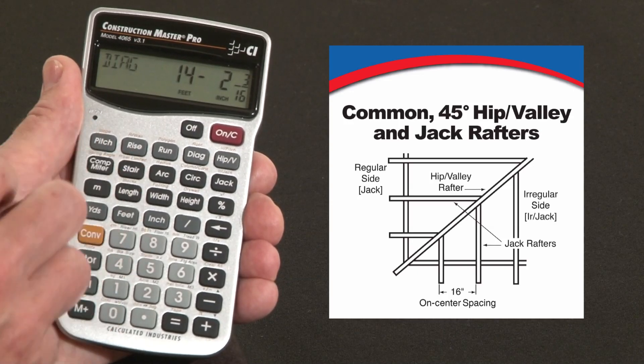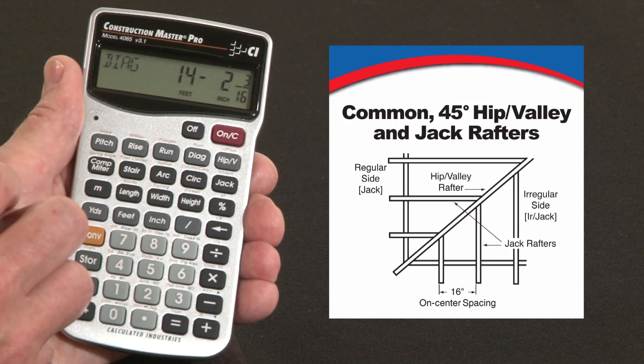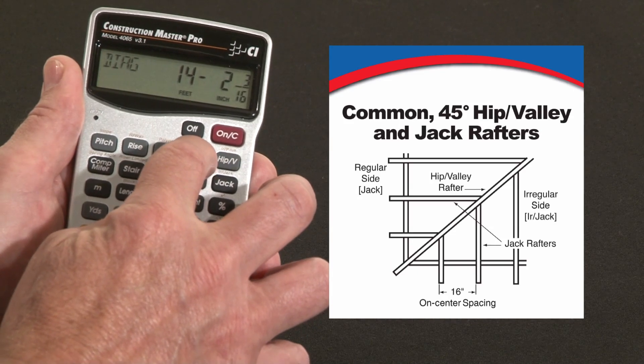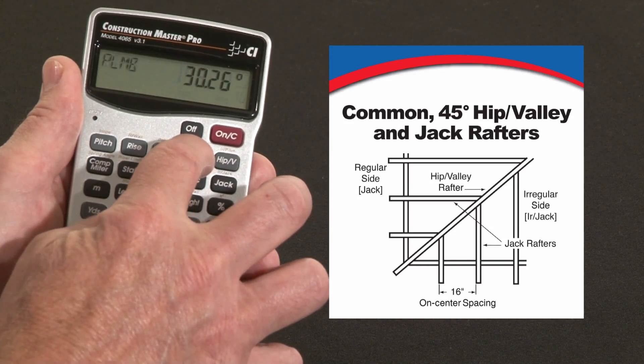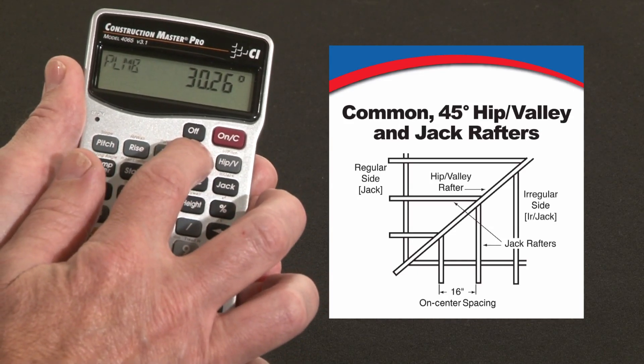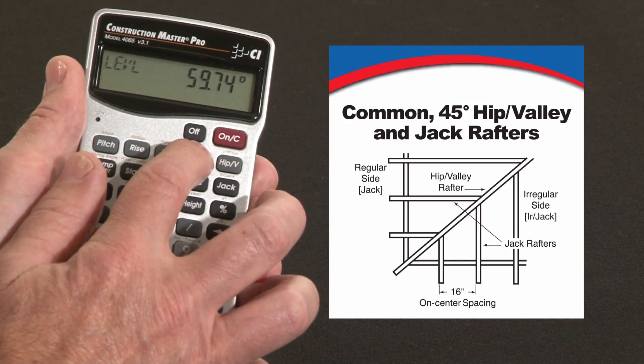That gives you the hypotenuse — the exact theoretical length. If I press that again, it'll give me the plumb cut angle and the level cut angle for the common rafter length.